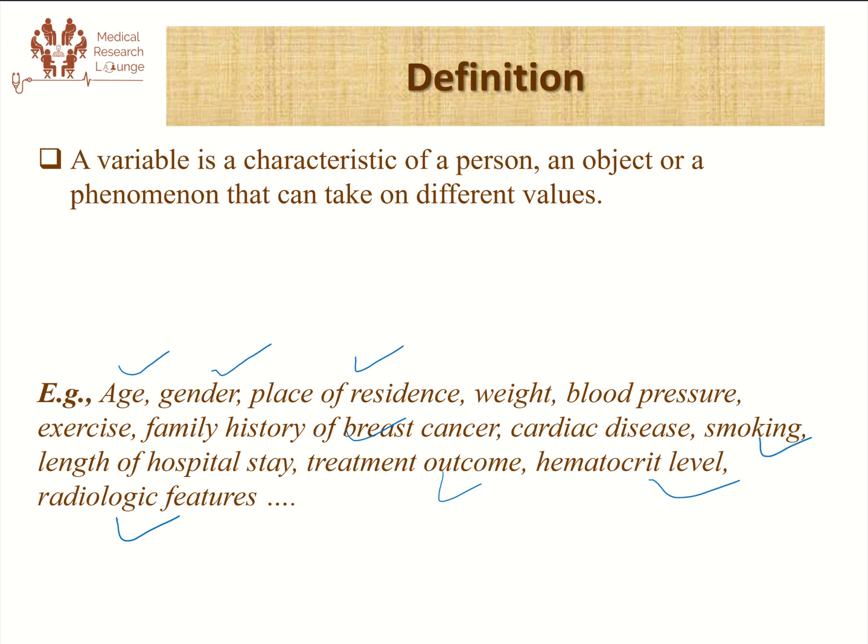But in other research, an object or a phenomenon — not just human study — these characteristics of an object or a phenomenon can also be treated as variables. It's not just individual or human being attributes that we call variables.